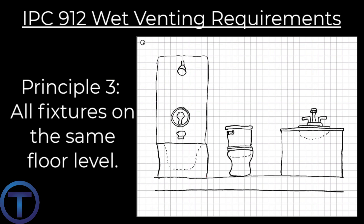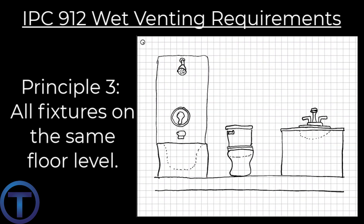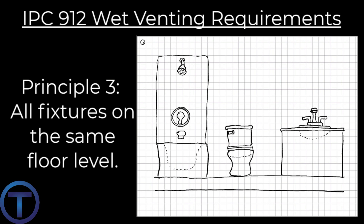Vertical wet vent principle three: all fixtures connected to the wet vent must be on the same floor level, as we learned in the definition. Vertical wet vent principle four: each fixture must connect independently to the wet vent, or the section of pipe that is being considered both a drain and a vent.